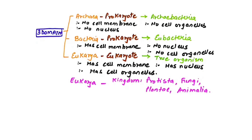The three domains: Archaea includes prokaryotic archaeabacteria — no cell membrane, no cell organelle, no nucleus. Bacteria includes prokaryotes (eubacteria, the true bacteria) — has a cell membrane but no nucleus and no cell organelles. Eukarya includes all eukaryotes — has a cell membrane, nucleus, and all organelles. Eukarya contains four kingdoms: Protista, Fungi, Plantae, and Animalia. The Bacteria domain contains the kingdom Monera.